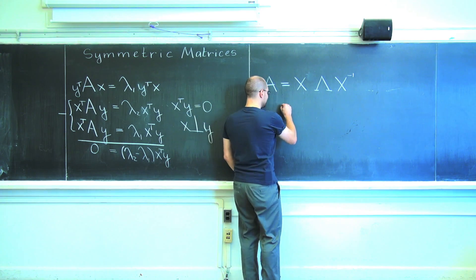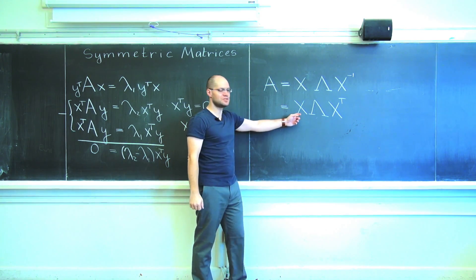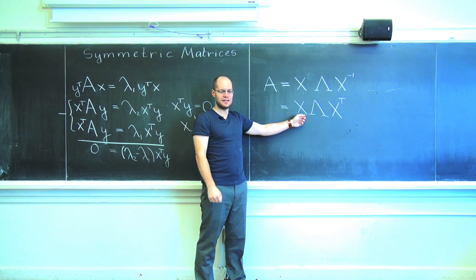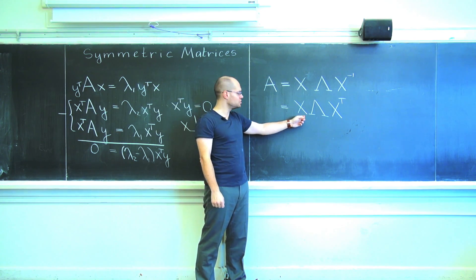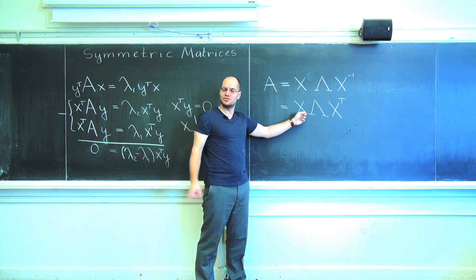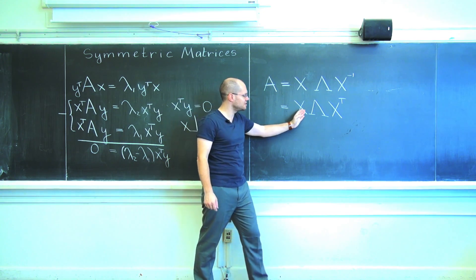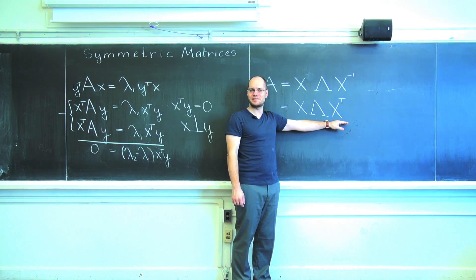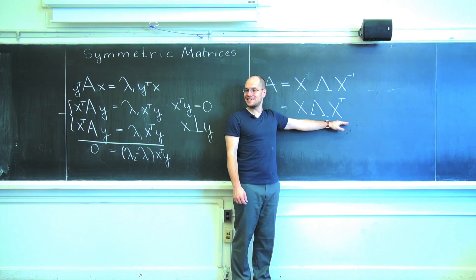So now we end up with this is what you get when you choose, when you have arbitrariness in choice of eigenvectors. So if you chose them to be orthonormal, which you can always achieve for symmetric matrices, you have this very special form of the eigenvalue decomposition.